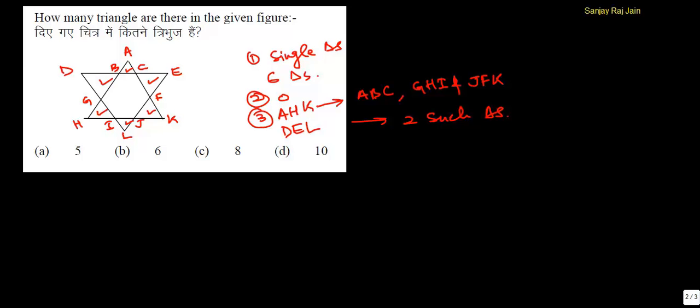So the total number of triangles in this figure is 6 plus 2, 8 triangles. And the correct option would be option C. Thank you.